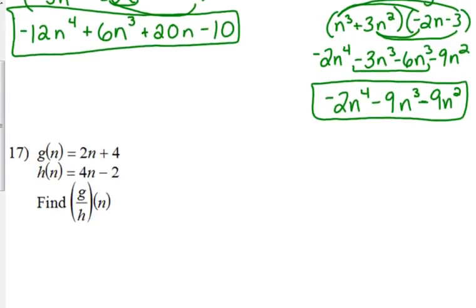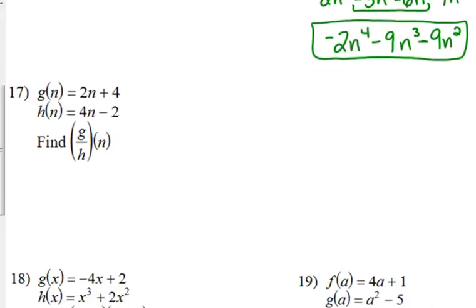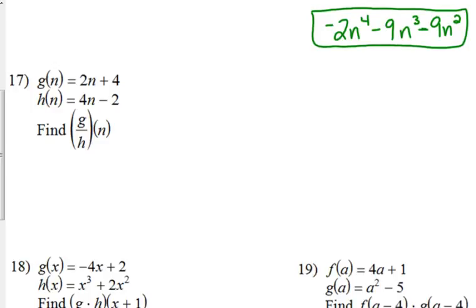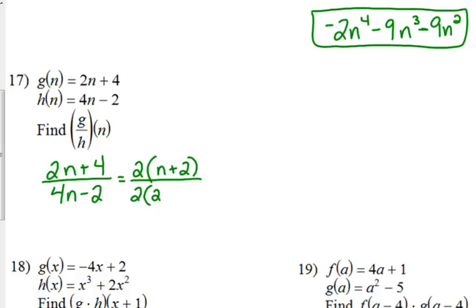Number 17 is really easy. It's division. Find g over h of n. But the part that makes it really easy is that all you do is put the top function, g goes on top, h goes on the bottom. Now, in this case, we can simplify that a little bit. But remember, we can always simplify if we can factor. So I'm going to factor out a GCF of 2 from the numerator and a GCF of 2 from the denominator. 2 times n plus 2, 2 times 2n minus 1. I can cancel those 2s. So this is equal to n plus 2 over 2n minus 1.